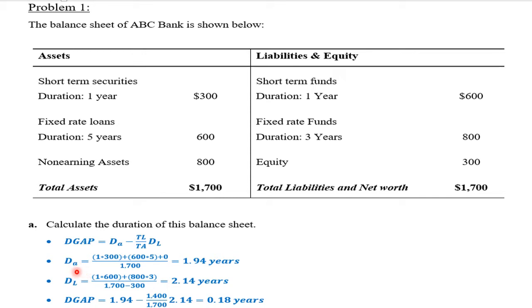The duration of assets is equal to the amount of assets times its duration in years — make sure the duration is in years. So: 300 times 1, plus 600 times 5, plus 0 since the non-earning assets do not have a duration (800 times 0 years), divided by the total assets of 1,700. The duration of assets equals 1.94 years.